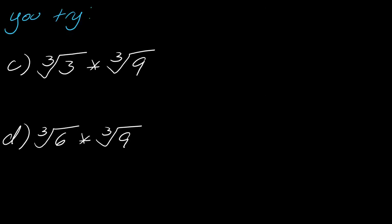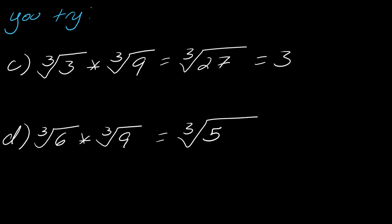So why don't you try these two and hit play when you're ready. So with this first one, this is going to be the cube root of — so three times nine is 27. Although notice that you could actually simplify this, so this is now going to just equal three. So sometimes that happens when you're multiplying things together. For this next one, I've got the cube root of six times the cube root of nine, so if I multiply those together I get 54.